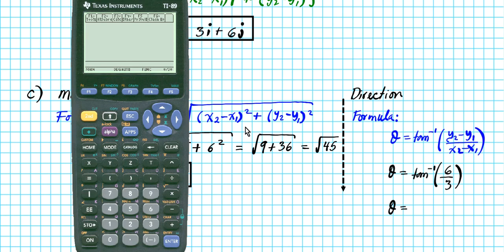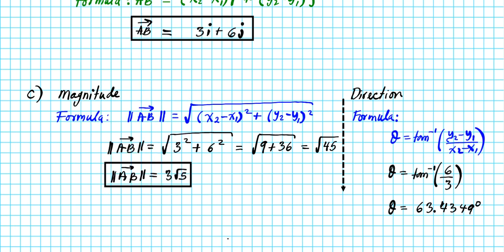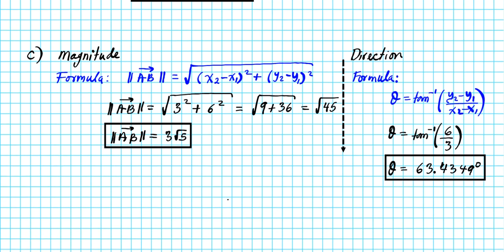Entering arctan(6/3) into the calculator in degree mode gives us 63.4349 degrees. That's the direction for the vector. With the magnitude (3 radical 5) and direction (63.4349°) determined, we are now in a position to answer the next question: finding the trigonometric form of the vector.